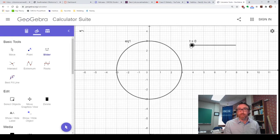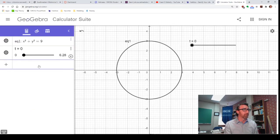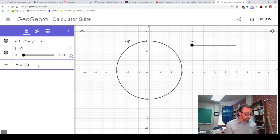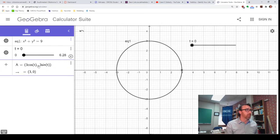Now, of course, right now nothing is happening when we slide this around because we haven't connected this variable t to anything in our graph. So here's what we're going to do. We're going to define a point A equals, and we'll make it 3 cosine t, that's our x-coordinate function, and then 3 sine t, that'll be our y-coordinate function.